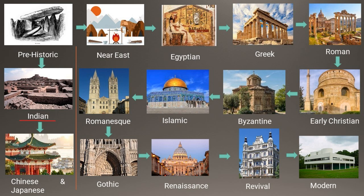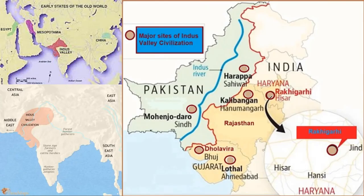The Indus Valley Civilization is a major and ancient civilization in the North West of the Indian subcontinent, and is also a period of the Bronze Age. It was spread over a large area including major parts of Punjab, Haryana, Rajasthan, UP, Gujarat, Sindh, and some cities from Pakistan. In 1921, Daya Ram Sahni discovered Harappa and excavated it, and in 1922, R.D. Banerjee excavated Mohenjo-daro. So far, more than 2,000 sites have been excavated and found in Indus Valley Civilization.